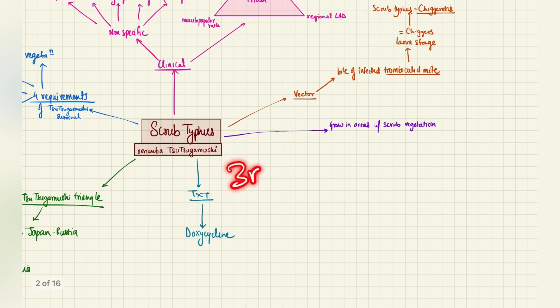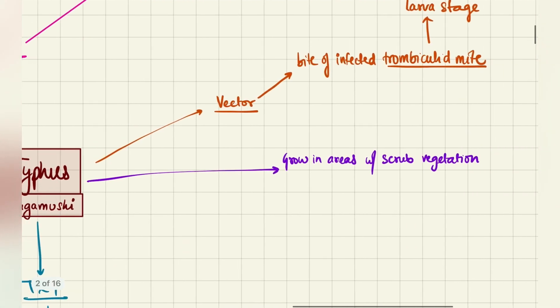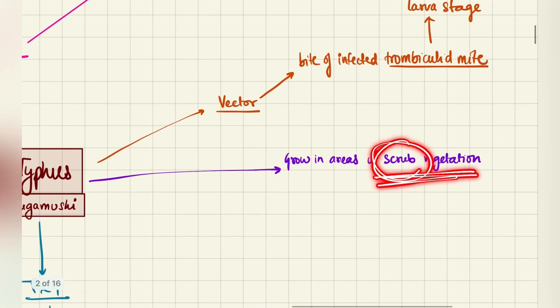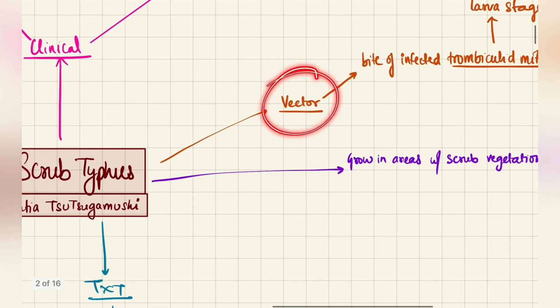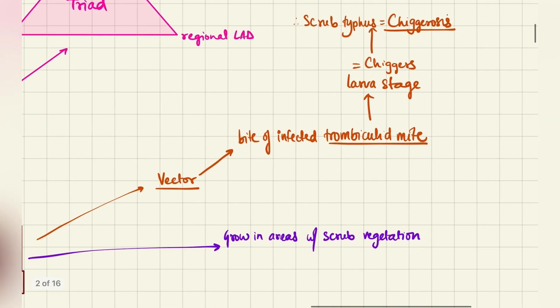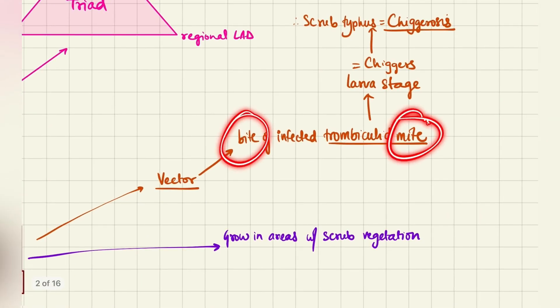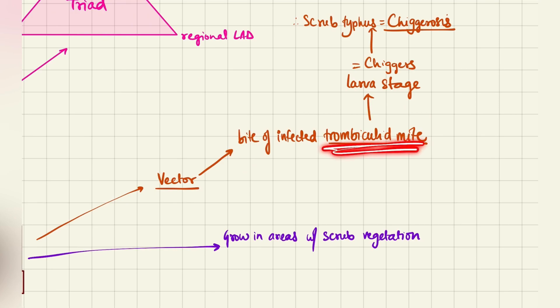This is a very important 3 marker question, so everyone must know it. So let's start. Scrub typhus grows in areas of scrub vegetation as the name suggests, and its vector is actually the bite of a mite as told in the previous video, the bite of the trombiculid mite.